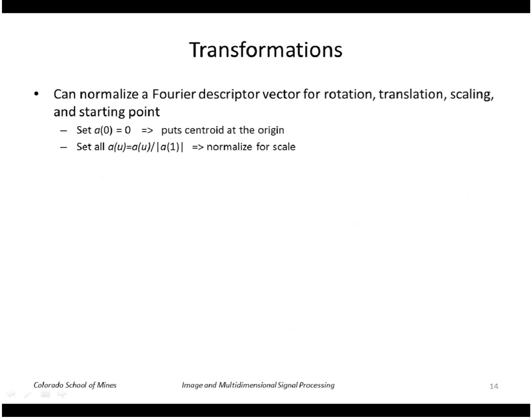So we can normalize a Fourier descriptor vector for these transformations. We'll set the zeroth descriptor to zero, so that basically zeros out the translation and puts the centroid at the origin.